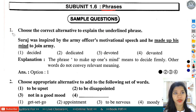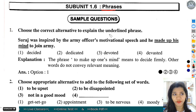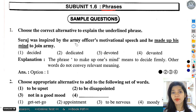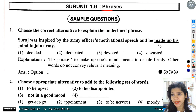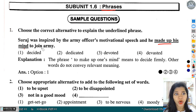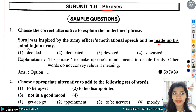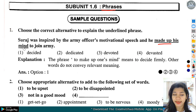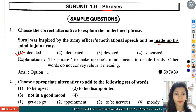Question number 1: Choose the correct alternative to explain the underlined phrase. Suraj was inspired by the army officer's motivational speech and he made up his mind to join army. 'Made up his mind' का मतलब होता है decide करना. तो option number 1 हमारा यहां पर correct होगा.